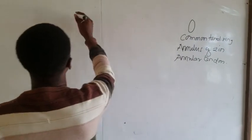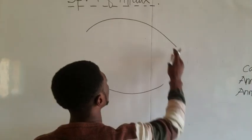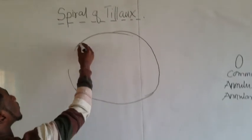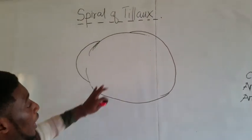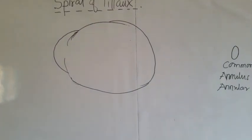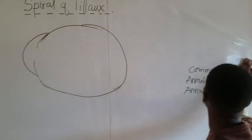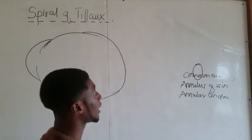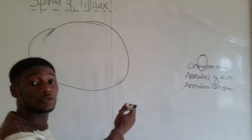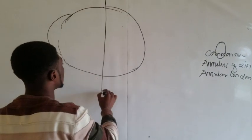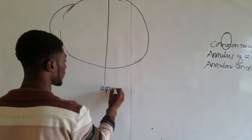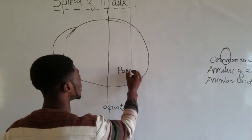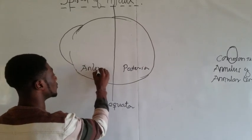So this is the common Tilaux ring, and this is the eyeball. The equator divides the globe into the posterior and anterior parts. So we have the equator here, dividing the globe into the posterior part and the anterior part of the globe.